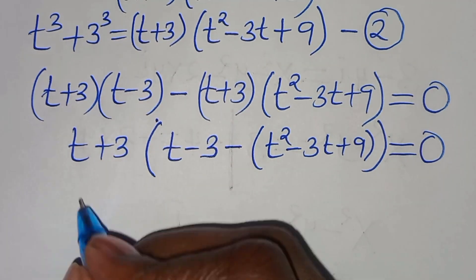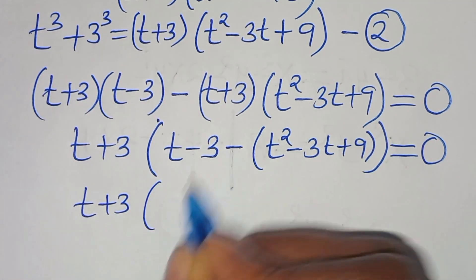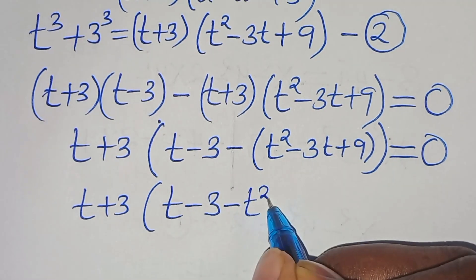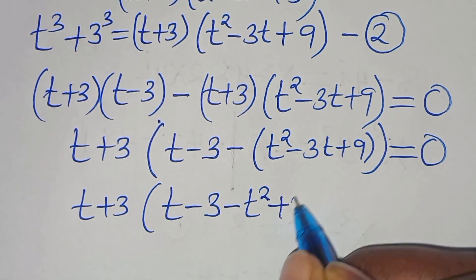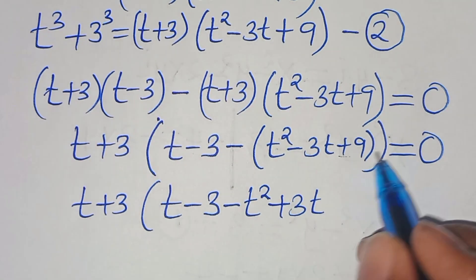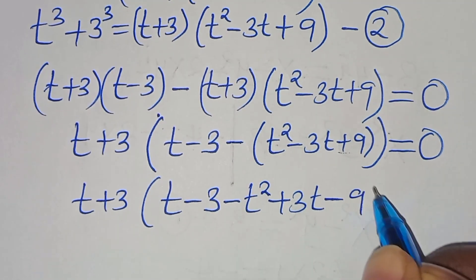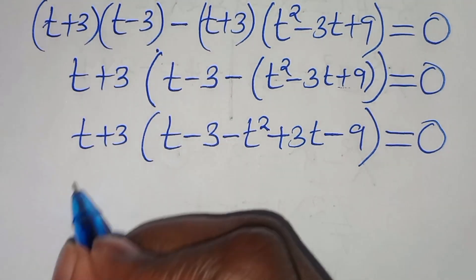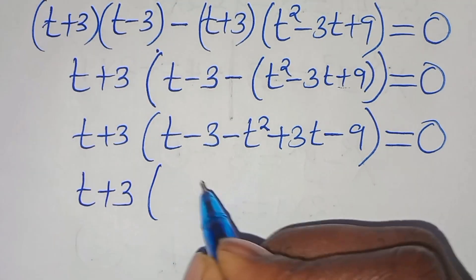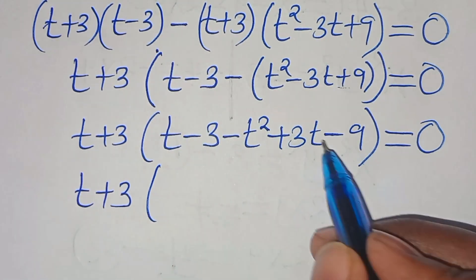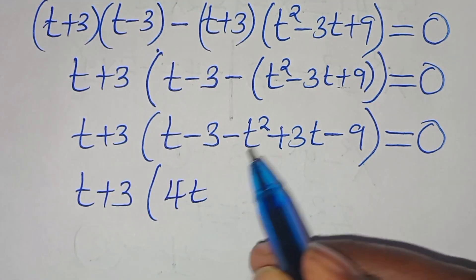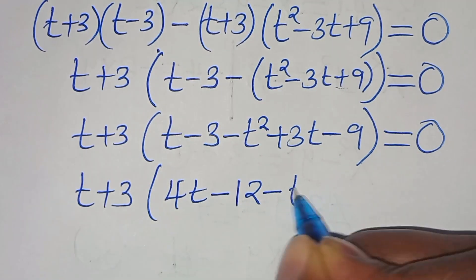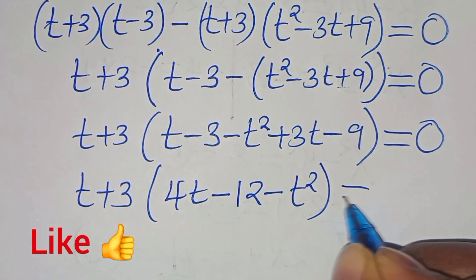Expanding the bracket, we have (t plus 3) times (t minus 3 minus t squared plus 3t minus 9), this is equal to 0. Combining like terms inside: t plus 3t gives 4t, and minus 3 minus 9 gives minus 12, so we have (t plus 3)(4t minus 12 minus t squared), this is equal to 0.